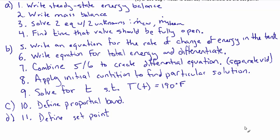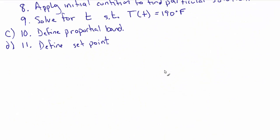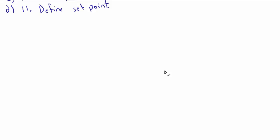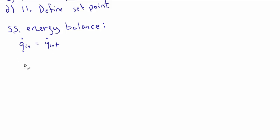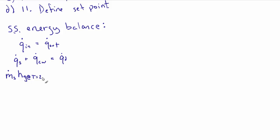Now let's start with Part A — writing the steady-state energy balance. At steady state, energy going in equals energy going out. We can write: Q-dot steam plus Q-dot cold water equals Q-dot drain. Each heat rate is expressed as a mass flow rate times an enthalpy. The steam coming in is saturated at 210°F, so its enthalpy is H_G at 210°F, which we look up in the steam table. The cold water enthalpy is H_F at 60°F, and the drain is H_F at 180°F.